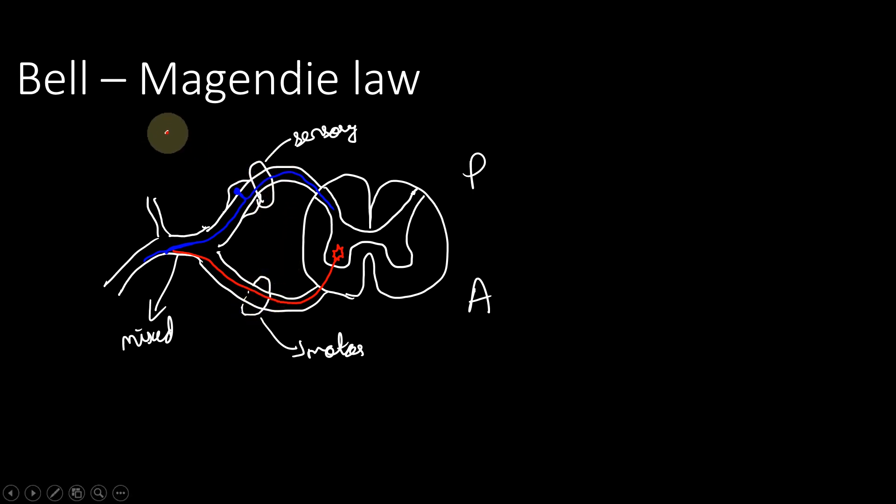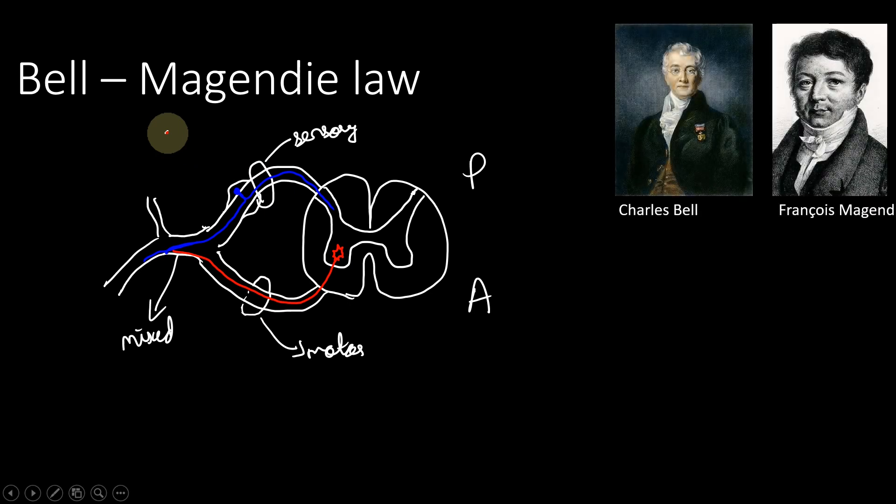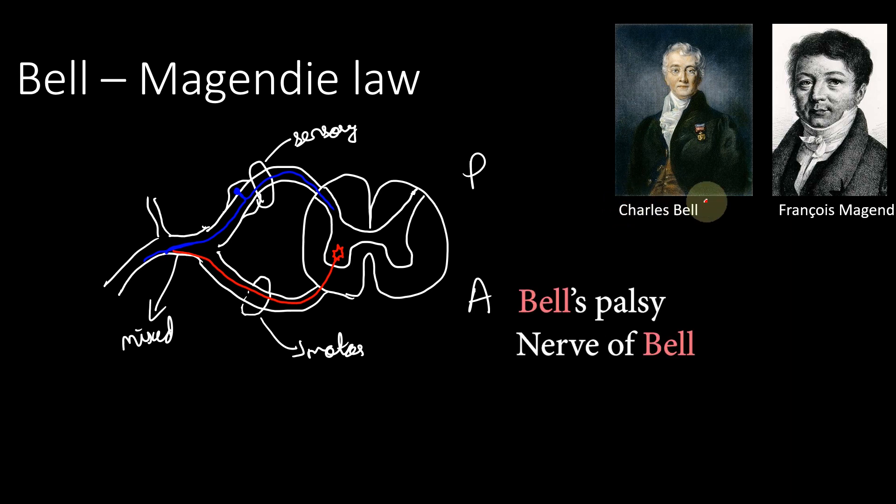This is called the Bell-Magendie law. This was discovered by Charles Bell, a British anatomist, and François Magendie, a French physiologist. Bell is the same person known for Bell's palsy and the nerve of Bell, and François Magendie is known for the foramen of Magendie. This is what is meant by Bell-Magendie law.